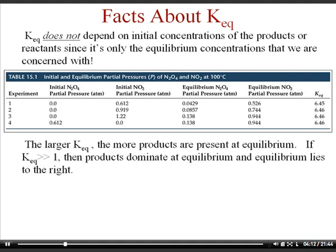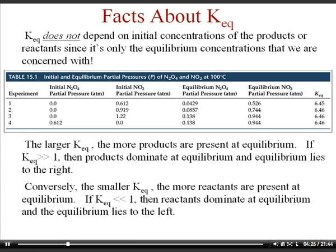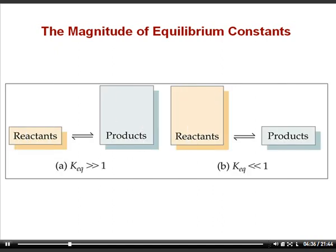If you have a large K — much greater than 1 — then more products are going to be present at equilibrium; the reaction still reaches equilibrium, but there will be far more products than reactants. Conversely, if you have a small K value, you mostly have reactants at equilibrium. This is shown visually: large K means mostly products, small K means mostly reactants.